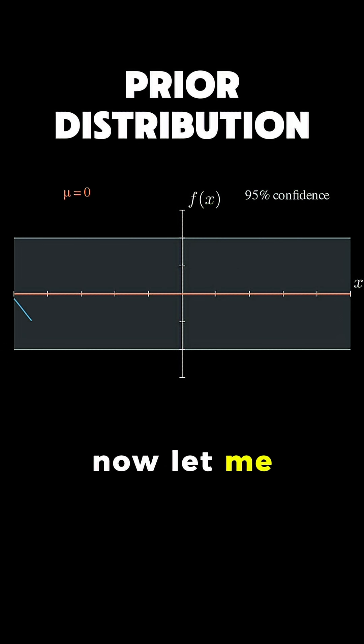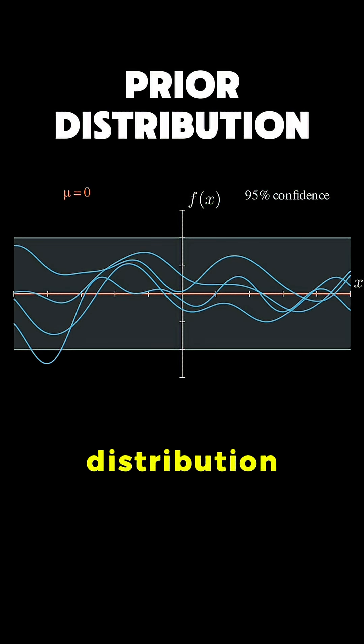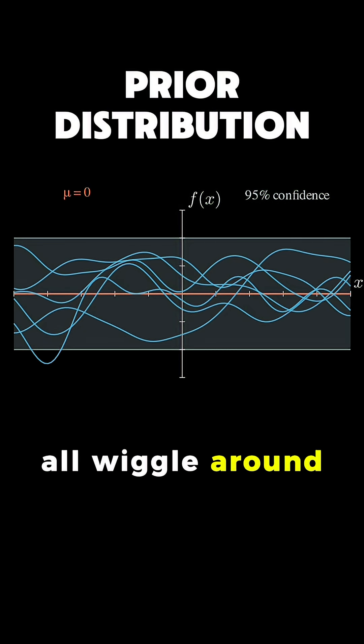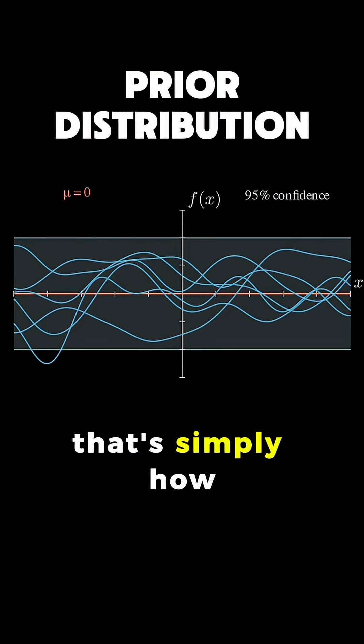Now, let me show you some examples from this prior distribution. See how they all wiggle around with those blue bands, this is what the whole function distribution looks like.